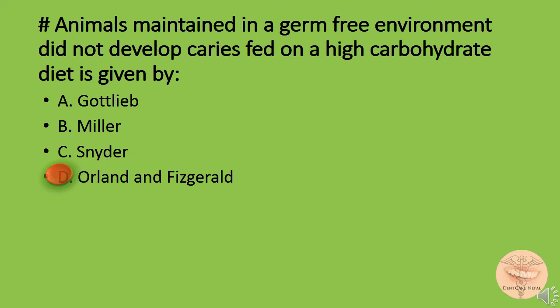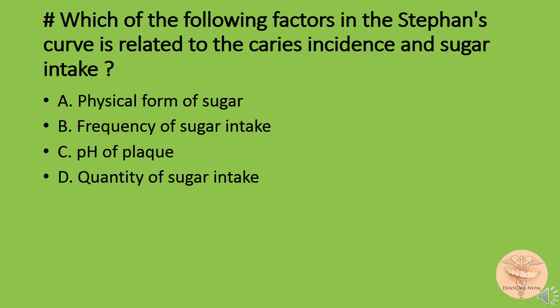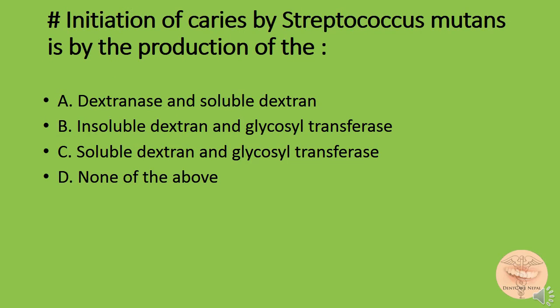Which of the following factors in the Stephan curve is related to dental caries incidence in sugar intake? Option A) physical form of sugar, option B) frequency of sugar intake, option C) pH of plaque, or option D) quantity of sugar intake. The correct answer is option C: pH of plaque.